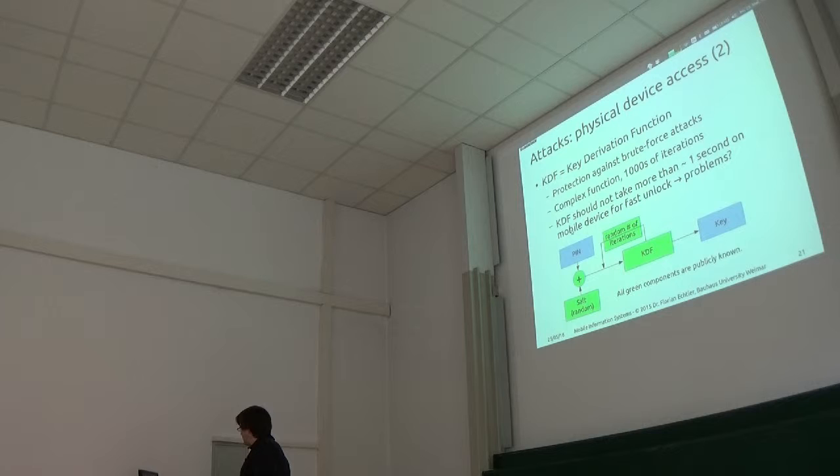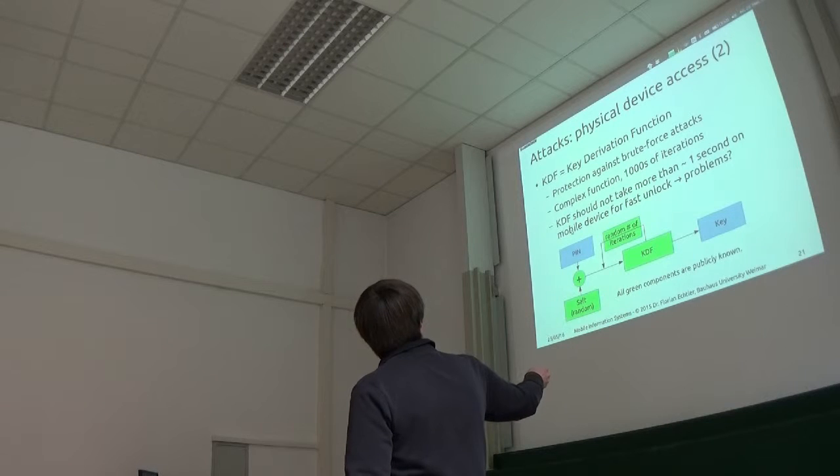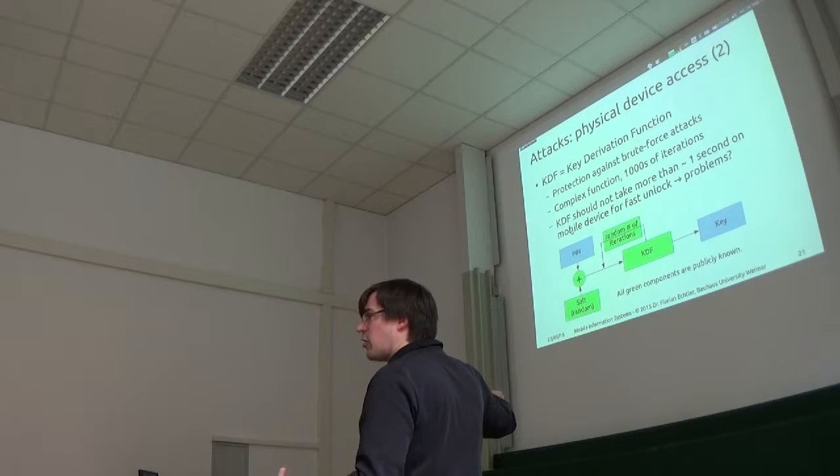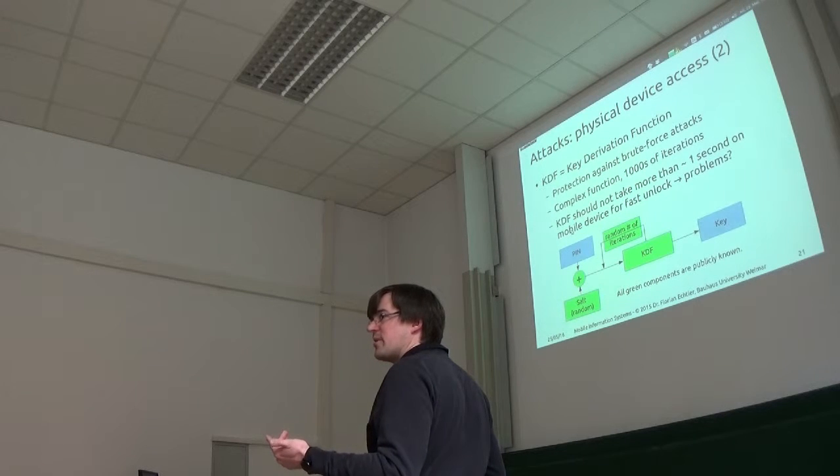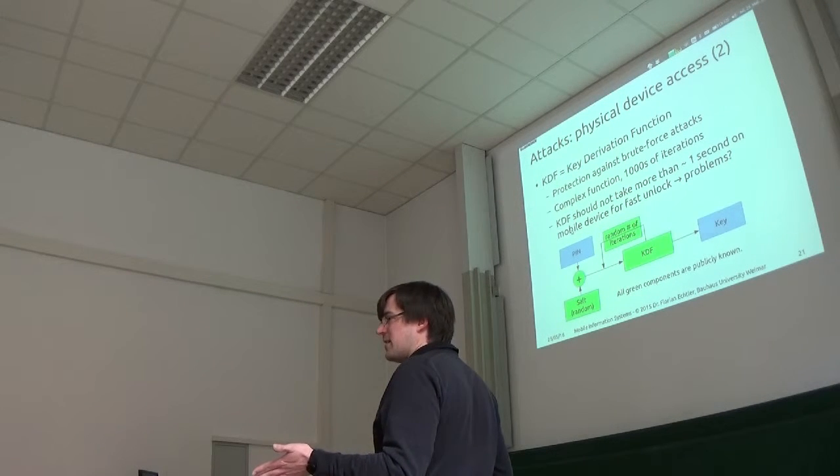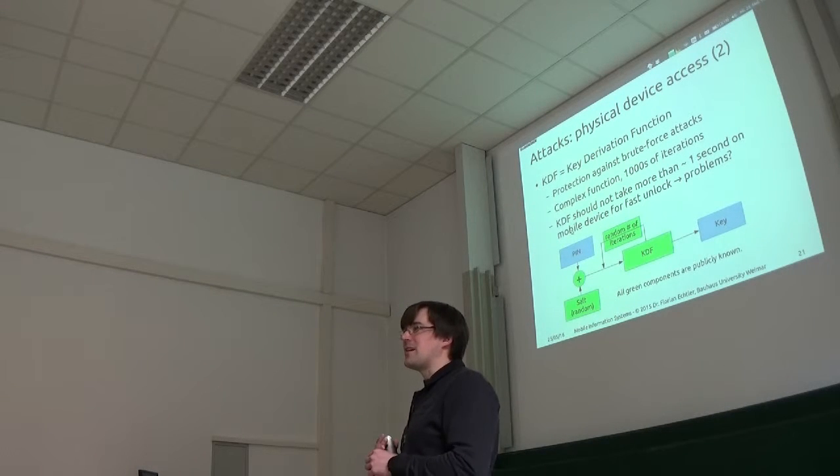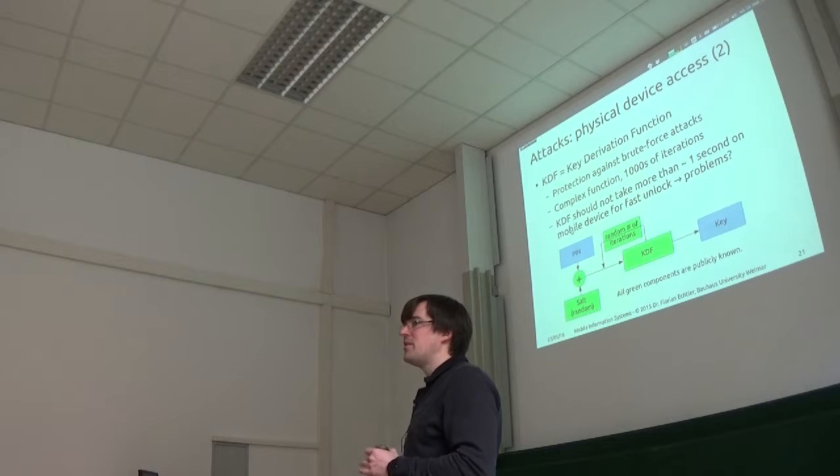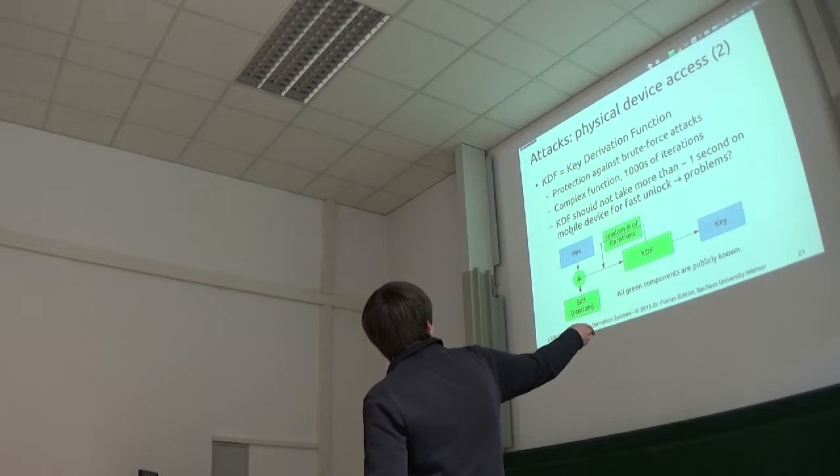So first way is to have this kind of key derivation function. So I've tried to illustrate this here. Key derivation function means you have first of all the PIN number by the user, that's known by you, PIN number or password or whatever. Then you have the so-called salt value, which is randomly chosen when you create a new PIN. Those are combined and then they are run through this key derivation function, and this is done several thousand times. Maybe there's a specific random number, this number is known, this is public, and from the result of that you get the key.